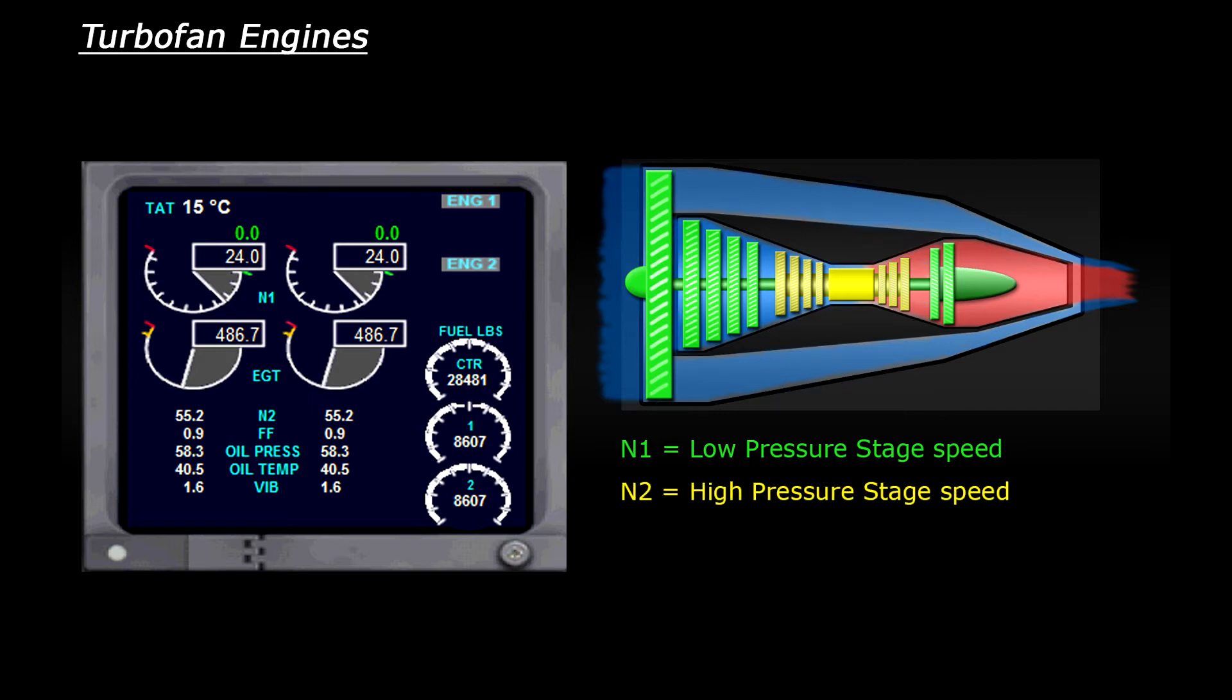You can see in this example that the N1 is currently at 24% and the N2 is currently at 55.2%. So there's an example of the two engine stages spinning at different speeds.